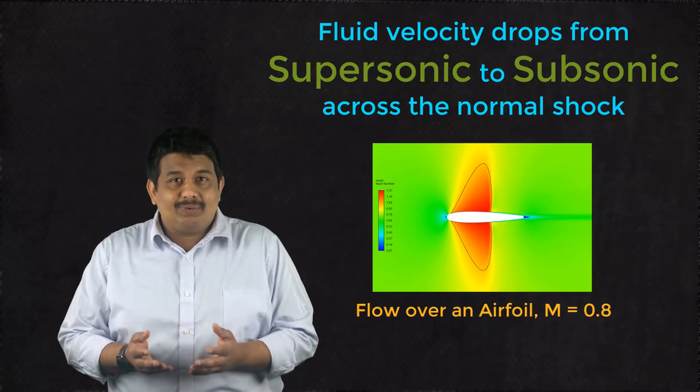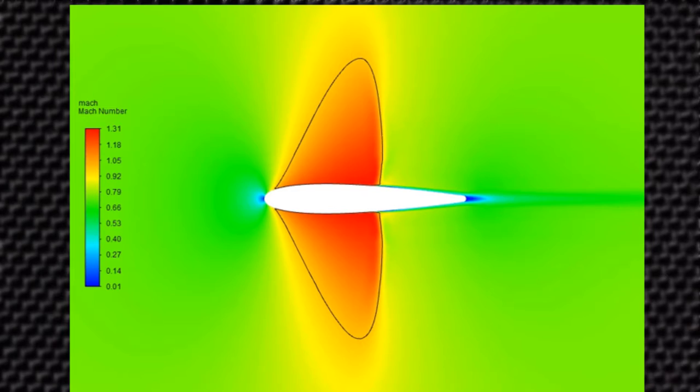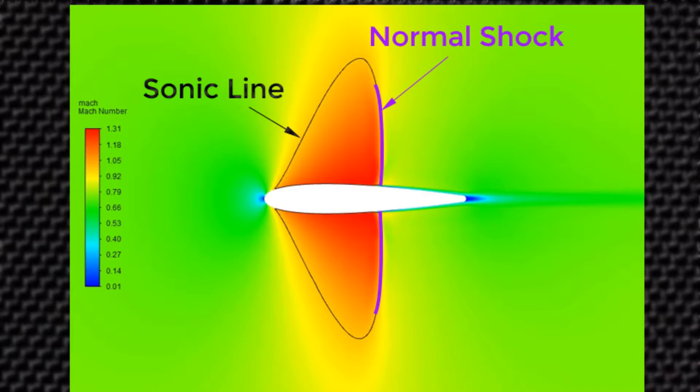This observation is quite useful in identifying shocks in numerical simulations. If we look into this airfoil simulation, it is clear that the local Mach number decelerates from supersonic to subsonic across the shock.